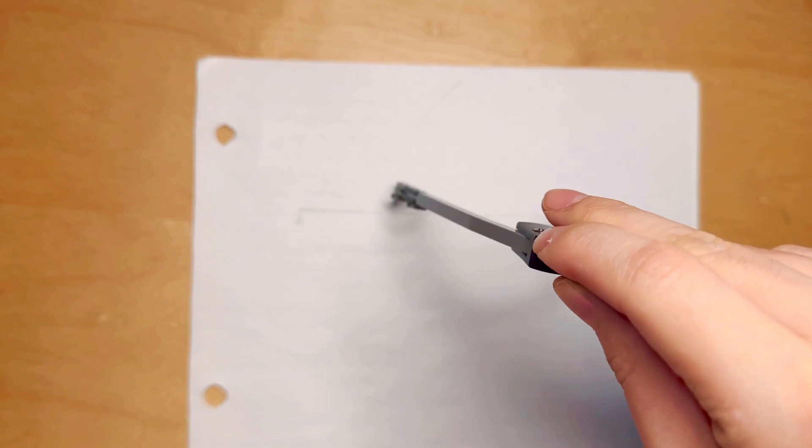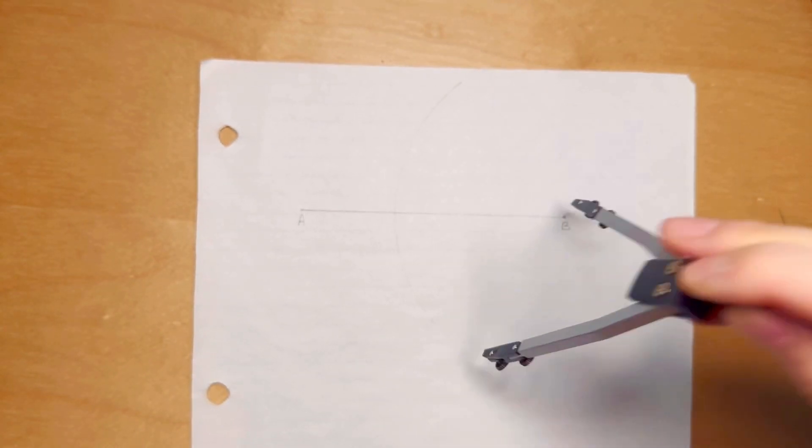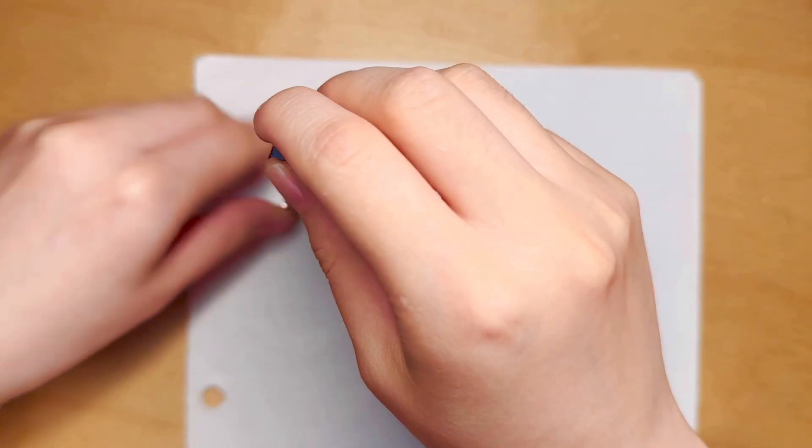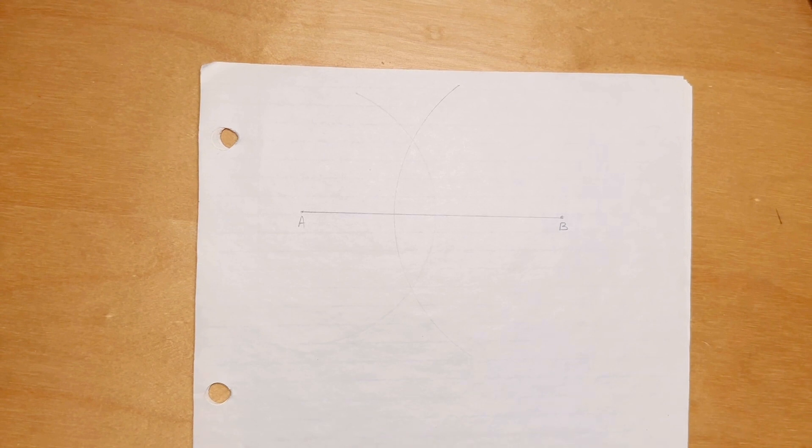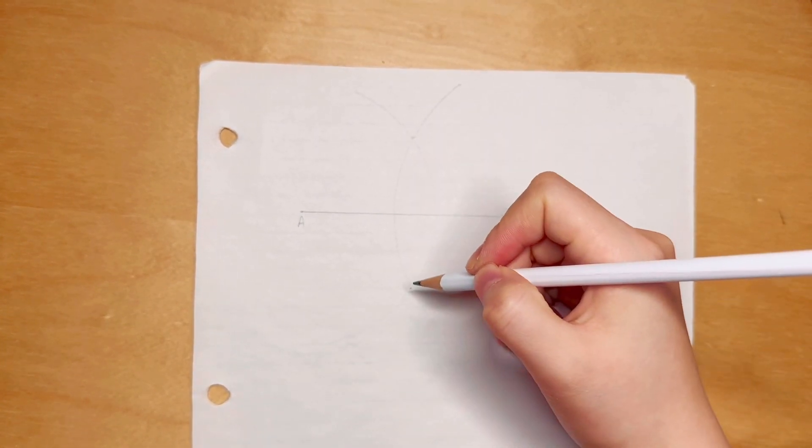So now you can draw something like this, and then if you connect these two intersections here and here, you will get a perpendicular line to this segment AB.